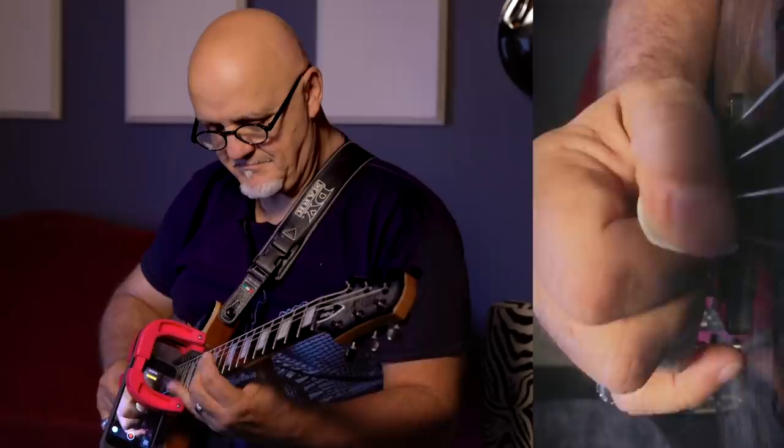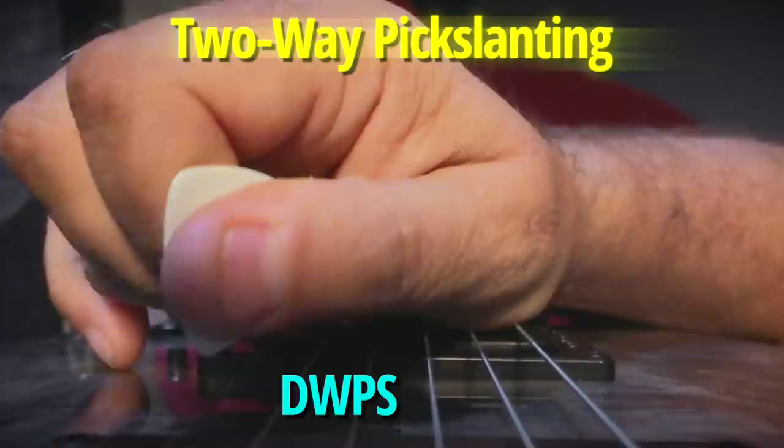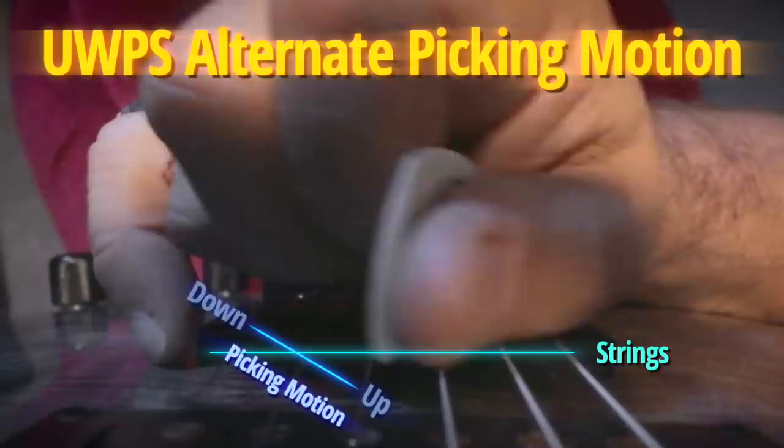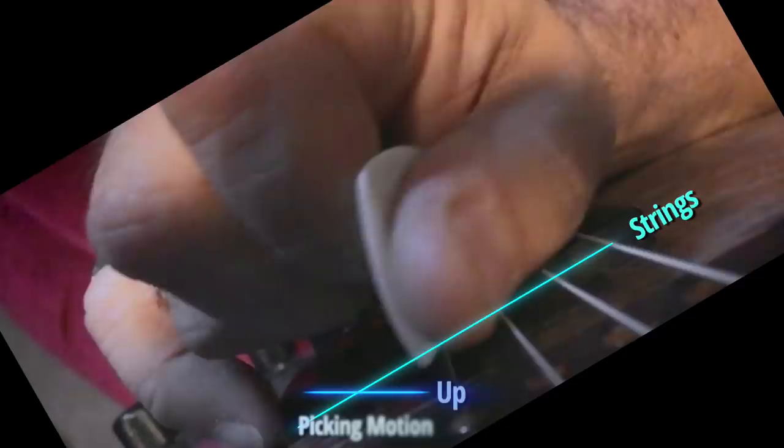So what we're getting at is that there's a connection between alternate picking and sweeping, and that connection is pick slanting. It's the glue between these two worlds, and it serves two different purposes, one for sweeping and one for alternate. During sweeping, the pick slant reduces the pick attack to make sweeping smoother. And during alternate picking, the pick slant equalizes the pick attack, so that it's about 90 degrees during both upstrokes and downstrokes.